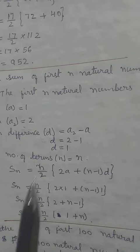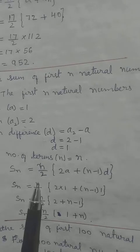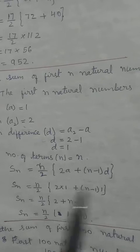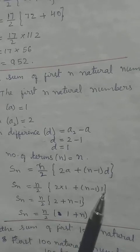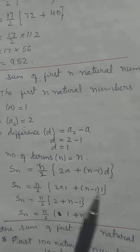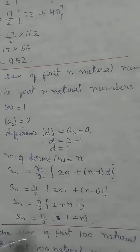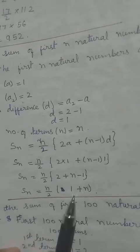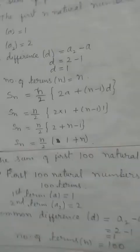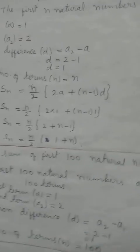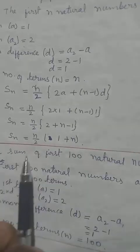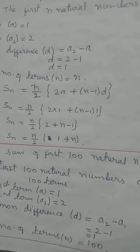With A = 1 and D = 1, S_N = N/2 × [2(1) + (N−1)(1)] = N/2 × (2 + N − 1) = N/2 × (N + 1). We cannot simplify further, so the answer is N(N+1)/2. For the second part, find the sum of the first 100 natural numbers.